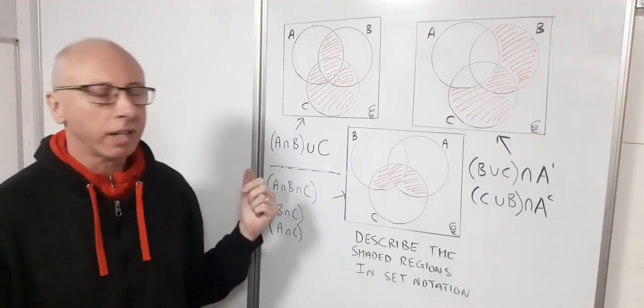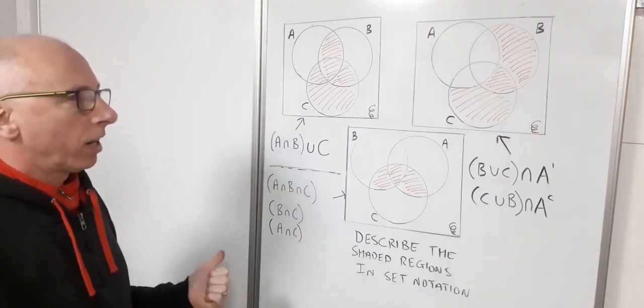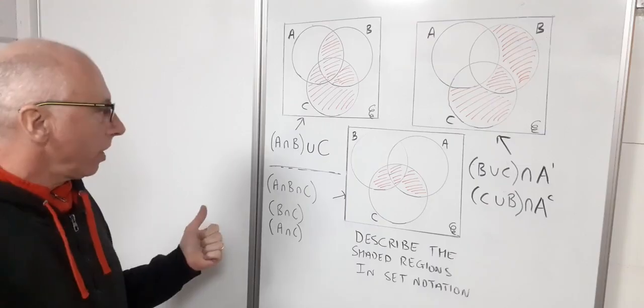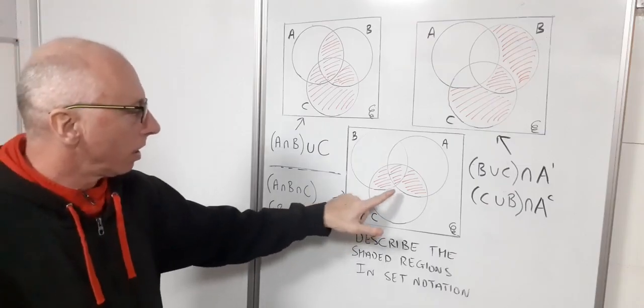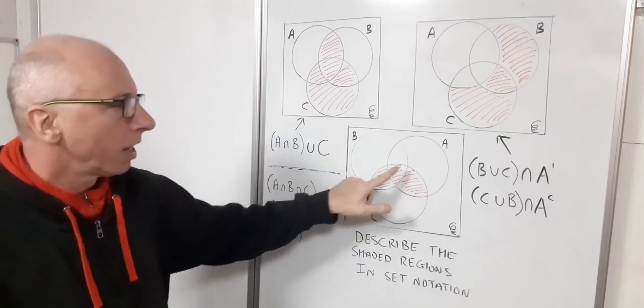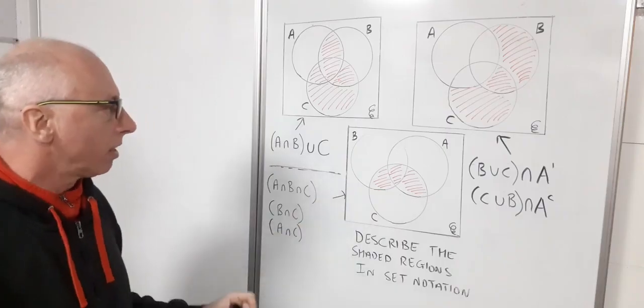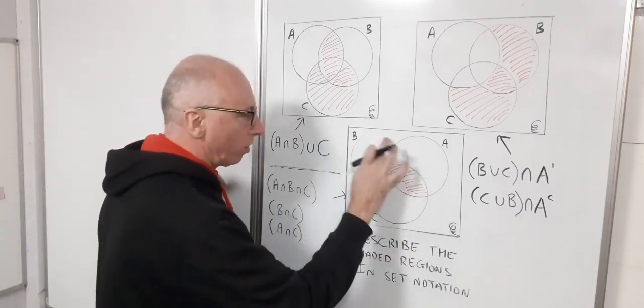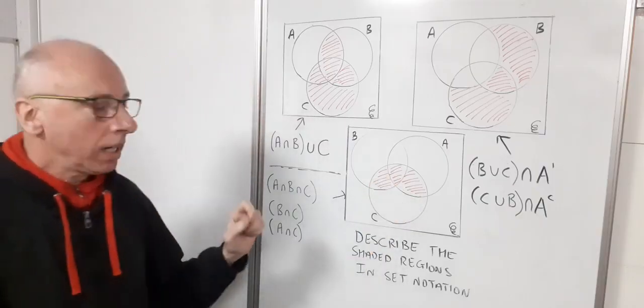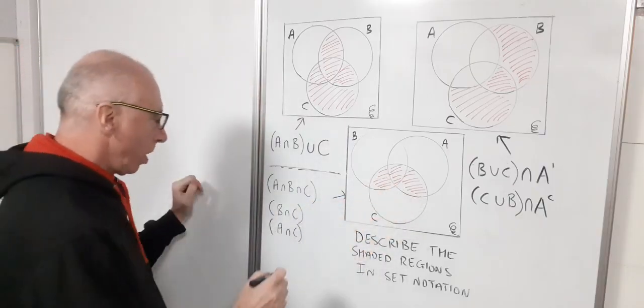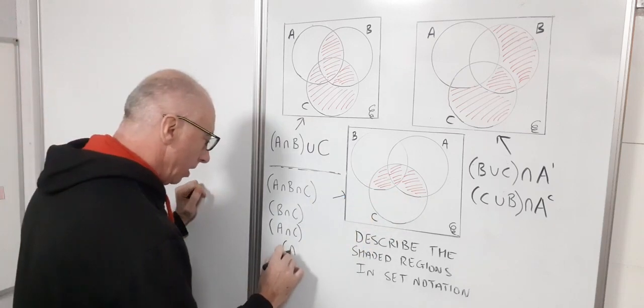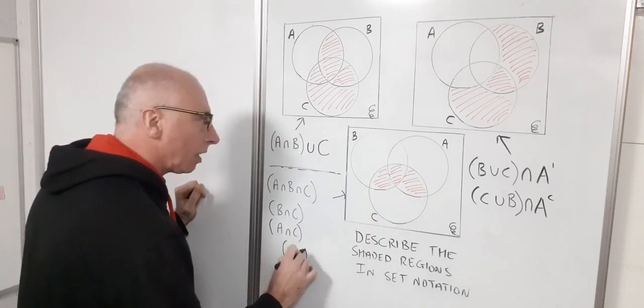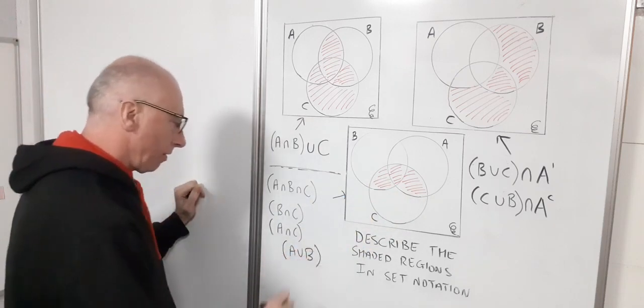One way I could do it: I could have intersecting with C, which is this bit, the A union B. If I had all of A and all of B, that would include that and all of that, but I only need the bit that touches C. So I would write that as A union B - that would take care of that.